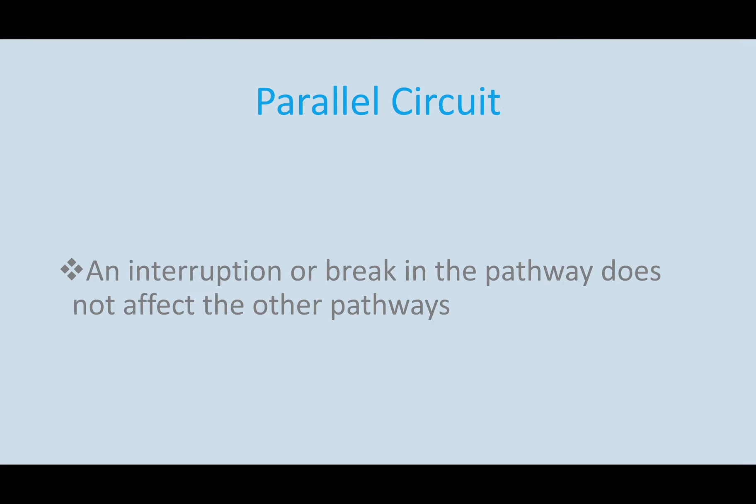With a parallel circuit, an interruption or break in the pathway does not affect the other pathways. You could think of something like your house being wired. If one light bulb goes out or one light goes out, it does not affect the electricity or the flow of electrons to other appliances in your house. Which makes sense because it would be a large inconvenience if one light bulb went out and everything in your house went out. Then you'd have to go through and find the one light bulb that didn't work and then replace it.